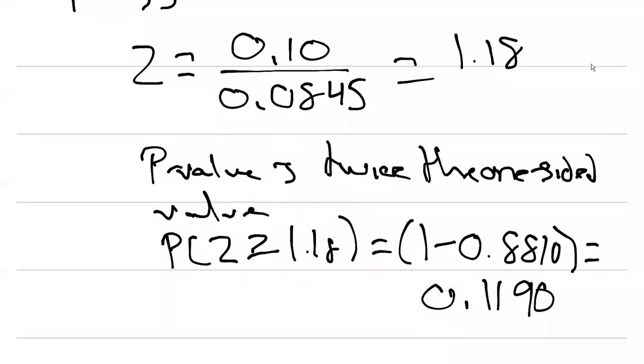And remember here our p-value was 0.1190 and we're running a test at 0.10. And so here our p-value was greater than our level of significance alpha at 0.10. And so this is important because it tells us the outcome of the hypothesis test.